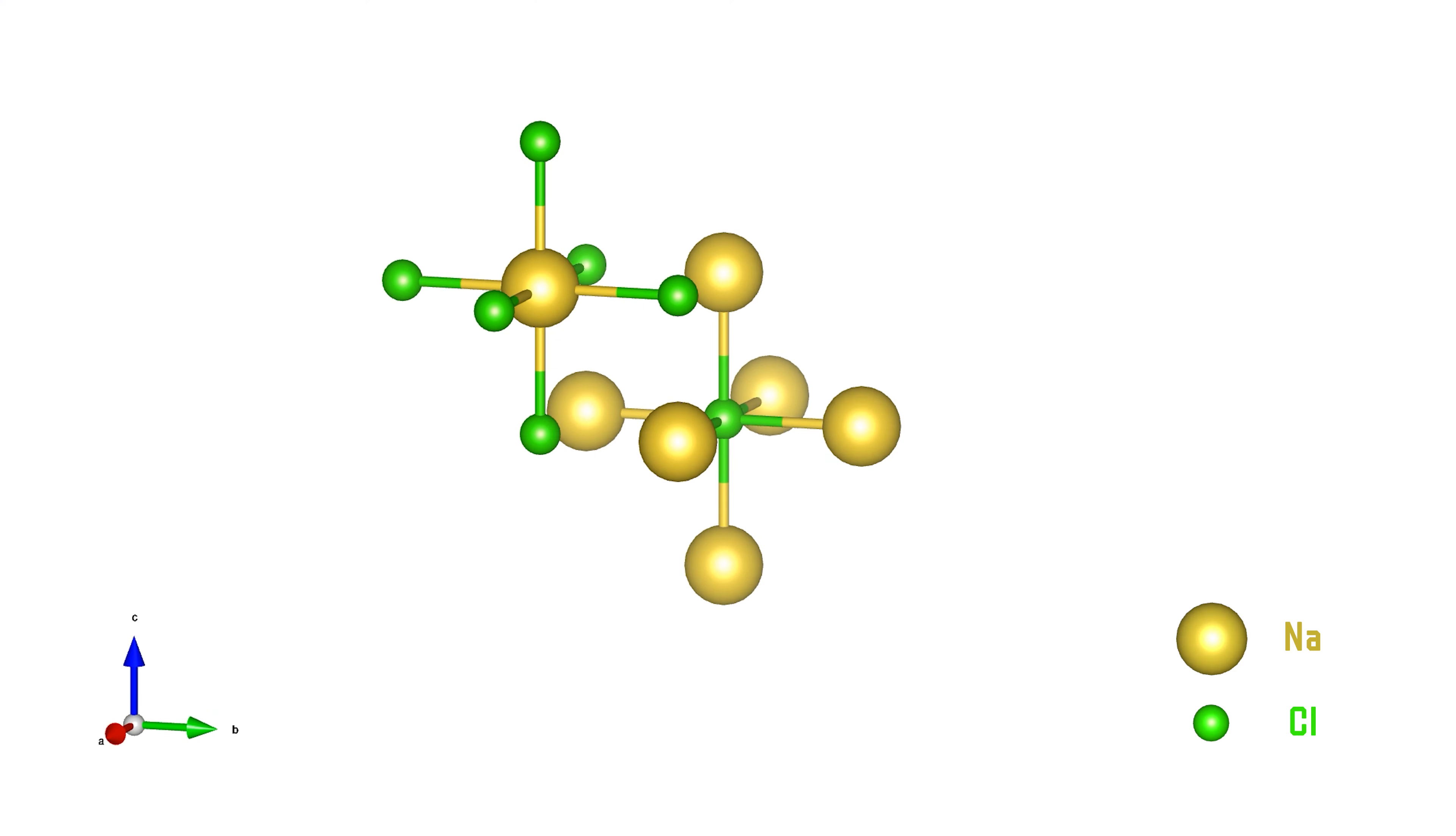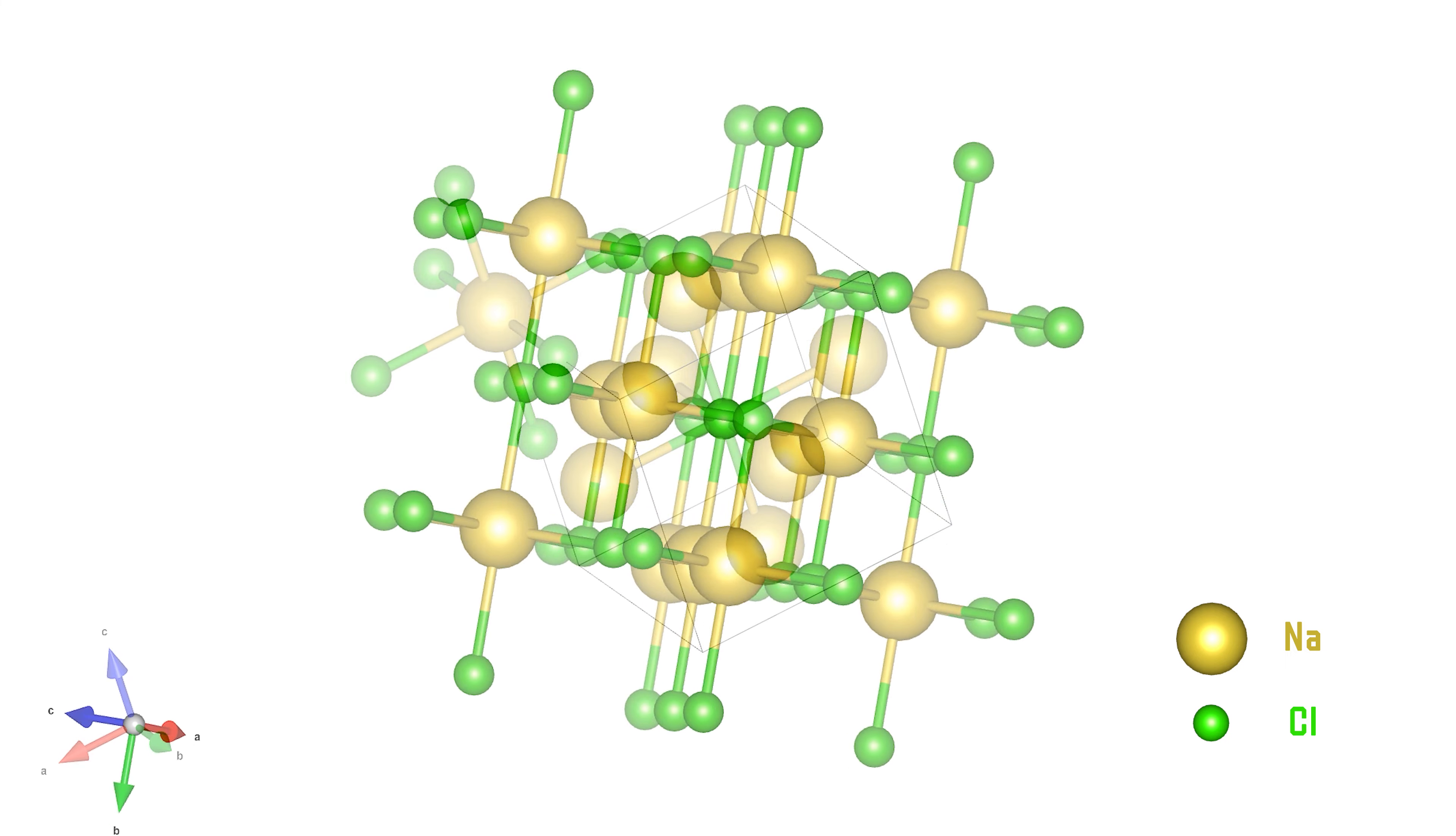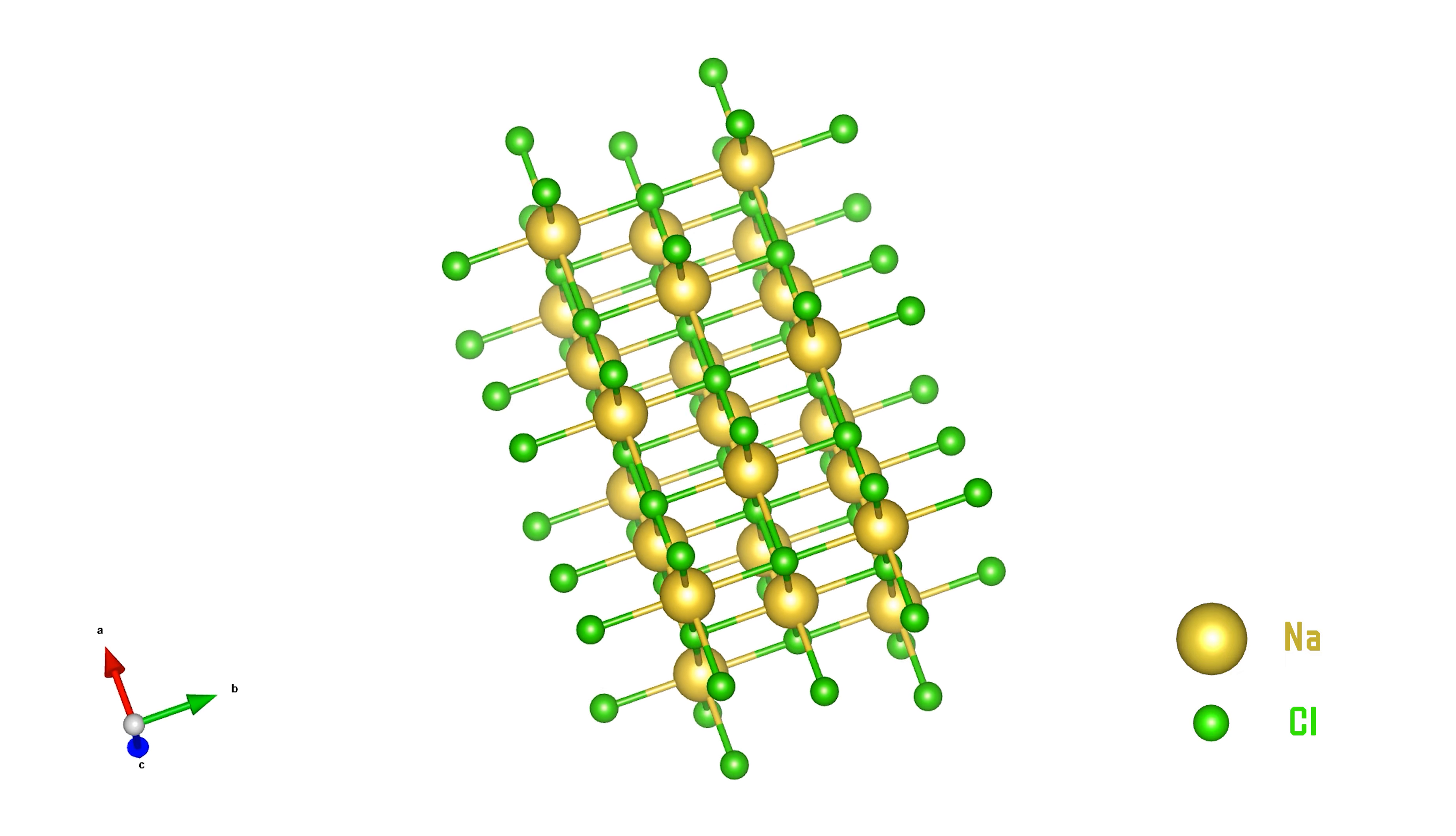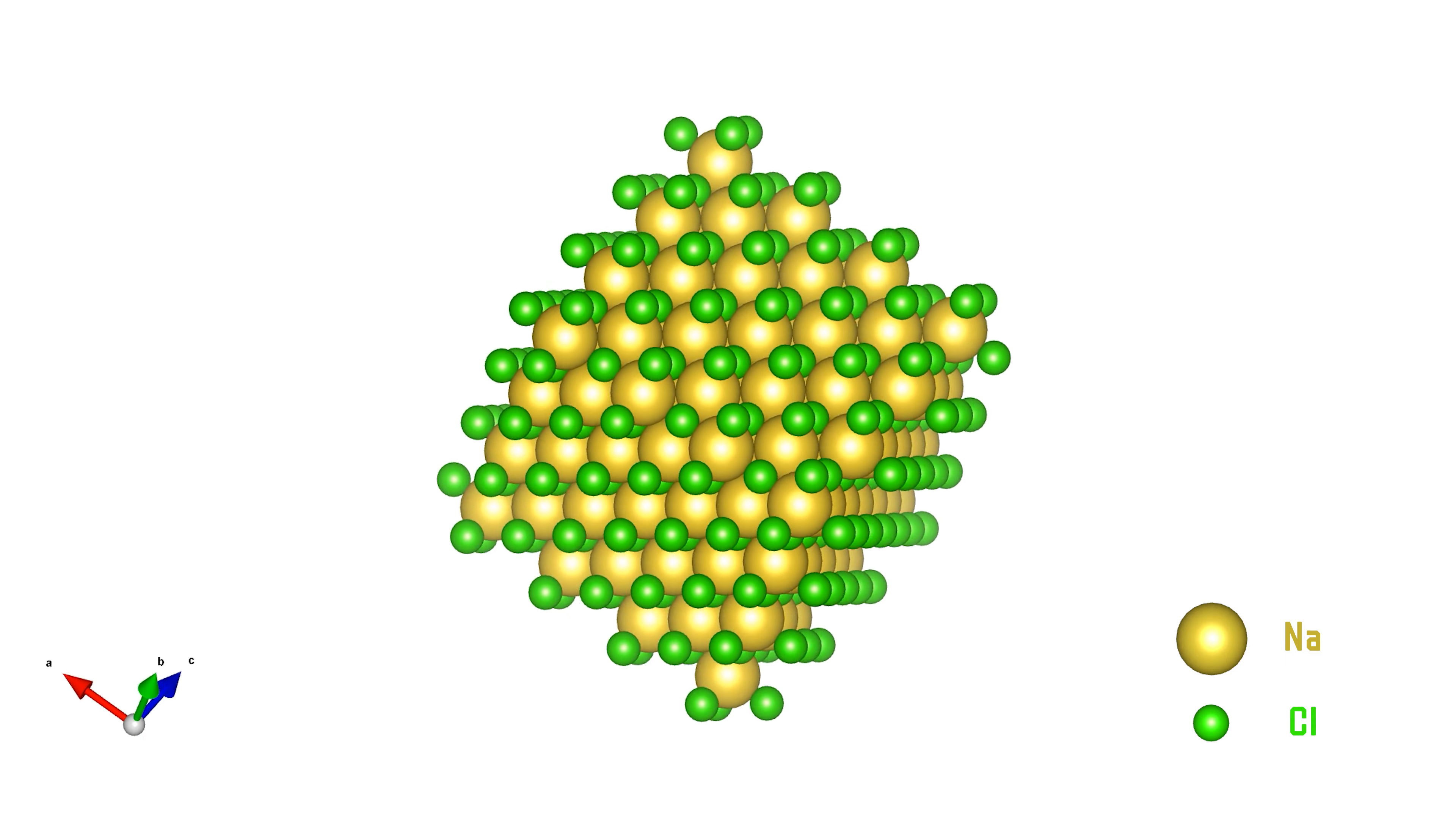In the structure of a sodium chloride crystal lattice, each chloride ion is surrounded by six sodium ions, while each sodium ion is surrounded by six chloride ions, forming a tightly packed arrangement.